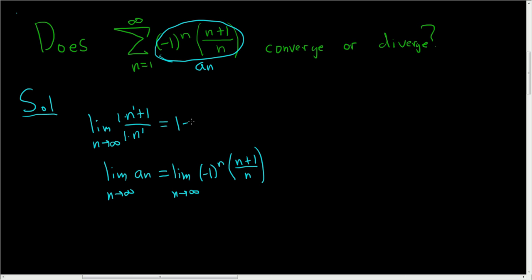This limit does not exist, right? Because this approaches 1, so this piece here approaches 1. But this is either 1 or negative 1, 1 or negative 1. So it's bouncing back and forth, it oscillates. So this limit does not exist.